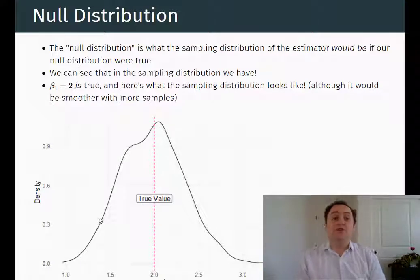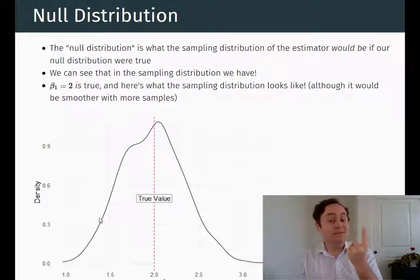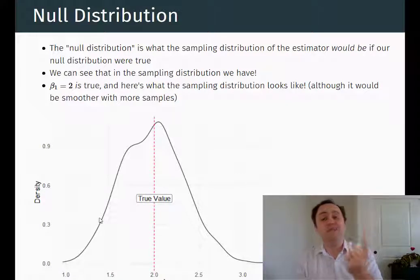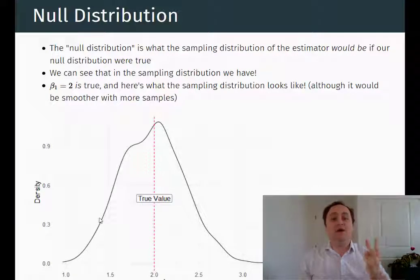So that's our idea. We look at the null distribution, and if the estimate we actually got is too unlikely given the null distribution, then we can reject the null — because we actually did get the estimate and they can't both be true. What we're going to do is characterize the null sampling distribution of our estimator under the assumption that the null is true, and check how unlikely our estimate is.